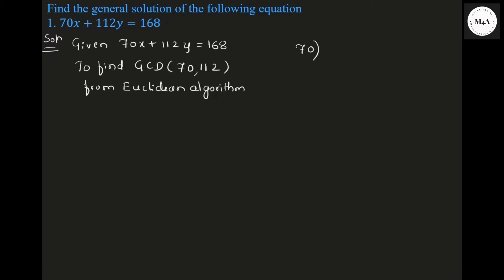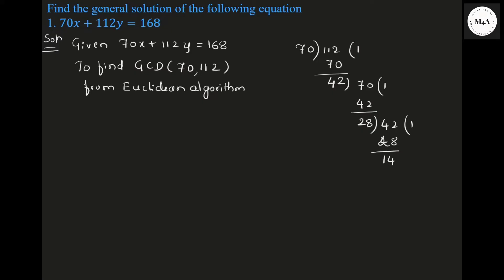The smallest number is 70. When 70 divides 112: 70 into 1 is 70, and 112 minus 70 is 42. Again, 42 divides 70: 42 into 1 is 42, and 70 minus 42 is 28. Again, 28 divides 42: 28 into 1 is 28, and 42 minus 28 is 14.